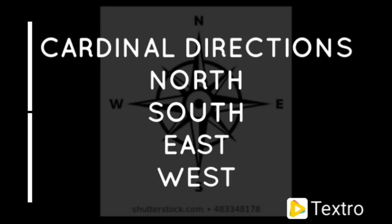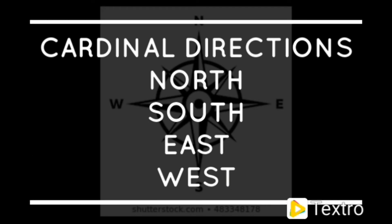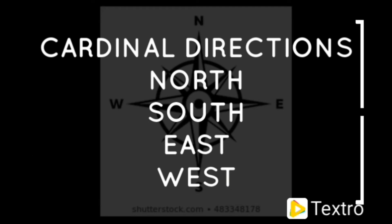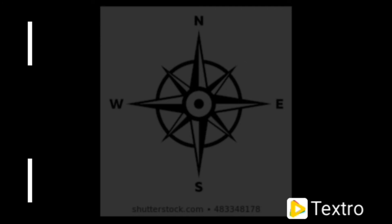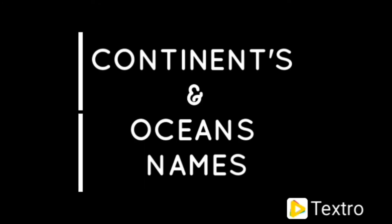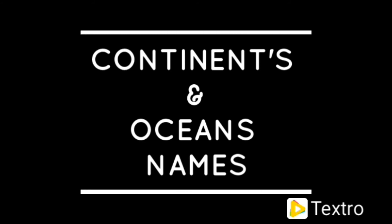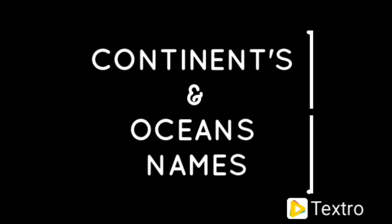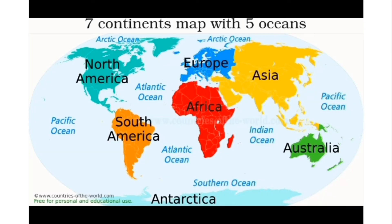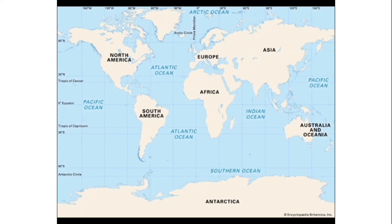This is a picture of a compass. Cardinal directions are north, south, east, and west. Now we will discuss about the continents and ocean names. Continent names: North America, South America, Europe, Africa, Asia, and Australia. Ocean names: Pacific Ocean, Atlantic Ocean, Arctic Ocean, Indian Ocean, and Southern Ocean.